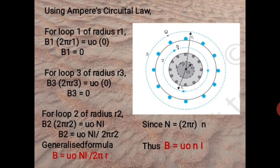This is the equation for the magnetic field at any point inside a toroid of average radius r. If small n is the number of turns per unit length, then we can write capital N = 2πr × n. Thus, we have the equation B = μ0nI.